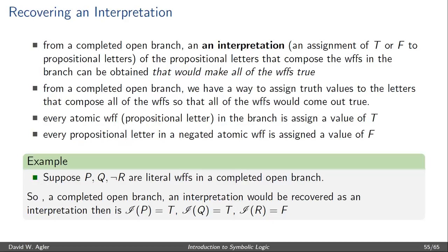We can obtain an interpretation by assigning true to the propositional letters found in atomic well-formed formulas, and false to the propositional letters found in negated atomic well-formed formulas. In other words, if we have P, Q, and not-R in a branch, we'll assign P a value of true, Q a value of true, and R a value of false.